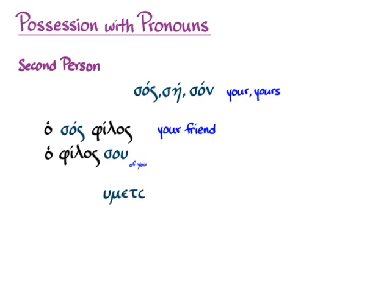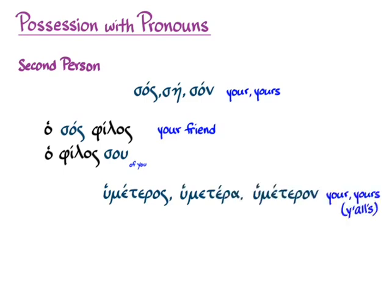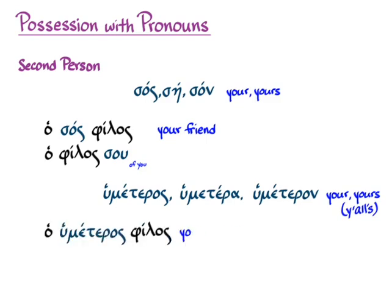In the plural, again we have a possessive adjective: humeteros, humentera, humeteron, meaning 'your' or 'y'all's,' because we like to make it clear we're talking about second person plural. What we get then is ho humeteros philos — 'your friend' or 'y'all's friend.' And if we use the second person plural pronoun in the genitive, we get ho philos humon — 'the friend of y'all,' or 'your friend,' or 'y'all's friend.'